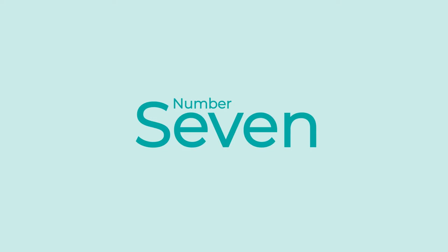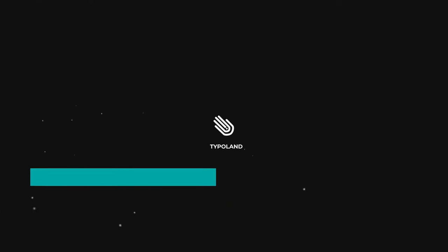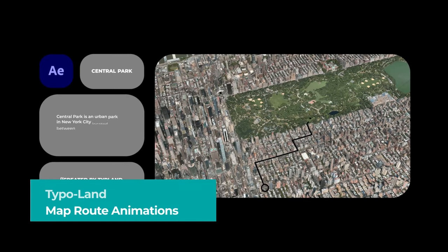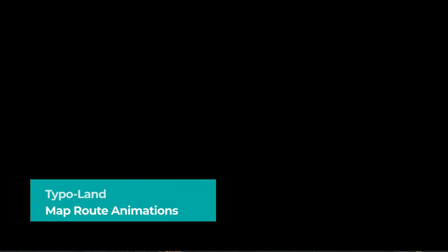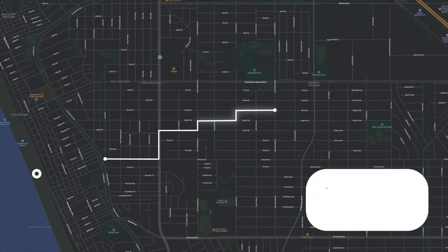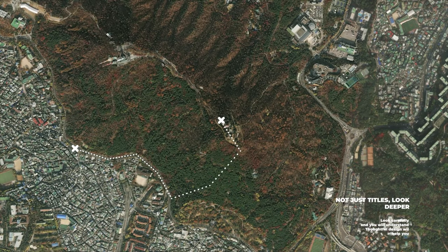Number 7. Map Root Animations by TypoLand. This After Effects map showcases 5 different routes with modern animated paths and minimalistic placeholders that will give your animation map a clean and elegant aesthetic.